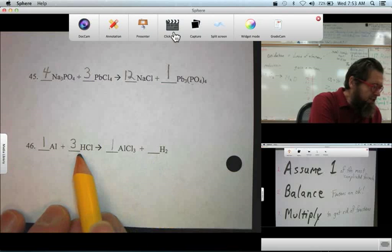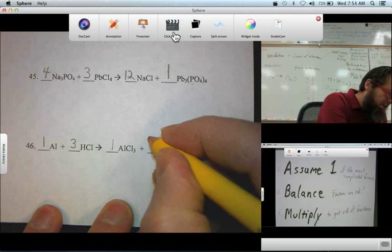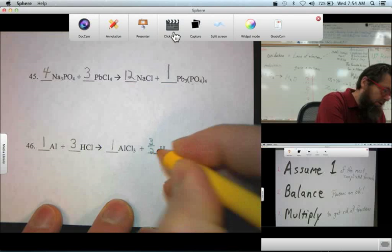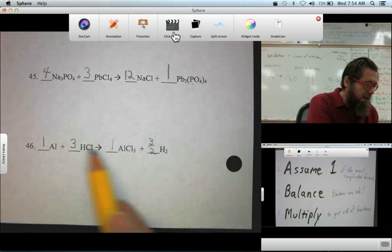We have three hydrogen atoms here. H2 has two hydrogen atoms. So, we need three over two H2s. One and a half H2s will give us three hydrogens. And now, the equation is balanced.